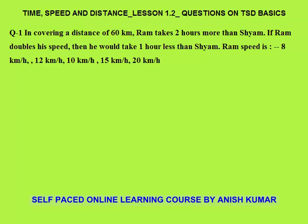Question 1: In covering a distance of 60 kilometers, Ram takes two hours more than Shyam. We don't know Ram's speed or Shyam's speed. If Ram doubles his speed, he would take one hour less than Shyam. The only thing we know is that distance is the same — 60 kilometers. Let speed of Shyam be SS and time taken by Shyam be T. So distance = SS × T, which is the case for Shyam.